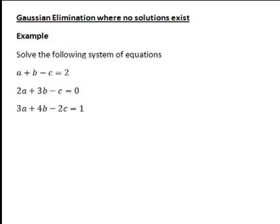So here are our equations: a plus b minus c equals 2, 2a plus 3b minus c equals 0, and 3a plus 4b minus 2c equals 1.